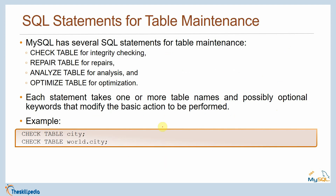MySQL has several SQL statements for table maintenance: CHECK TABLE for integrity checking, REPAIR TABLE for repairs, ANALYZE TABLE for analysis, and OPTIMIZE TABLE for optimization. Each statement takes one or more table names and possibly optional keywords that modify the basic action. For example, at the MySQL prompt you simply type: CHECK TABLE city, or CHECK TABLE world.city.